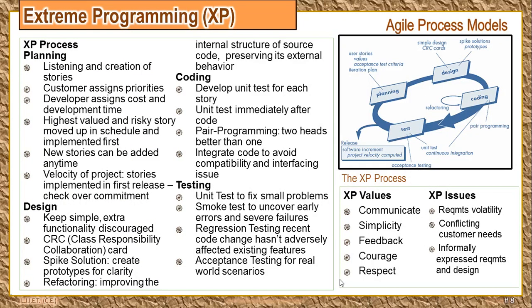Next is the designing phase. It consists of a simple design approach, CRC cards, and spike solutions. The first design concept is keep it simple — don't add extra functionality; focus on the current need, not future needs. CRC cards are cards containing a class, its responsibility, and collaboration. The class is the entity being discussed; responsibility is all things the class can do; and collaboration is all other entities with which the class will interact. These cards make design simple.